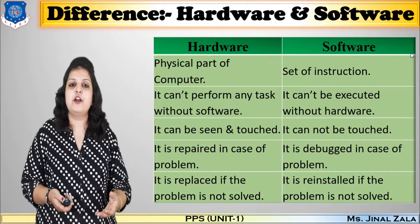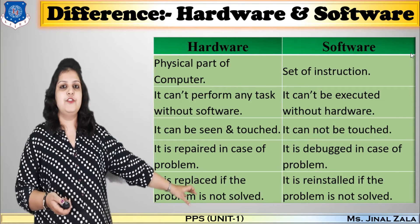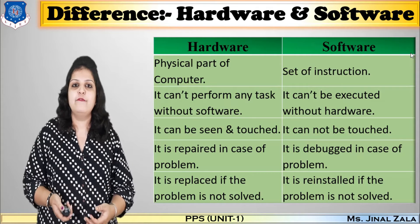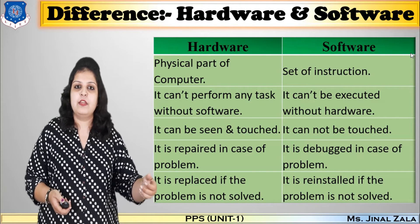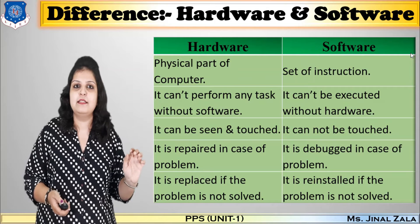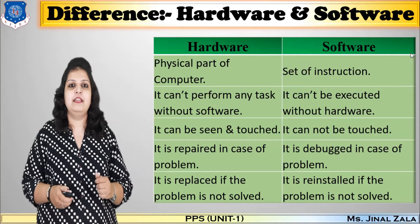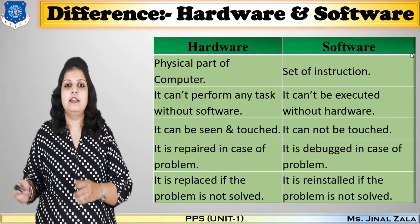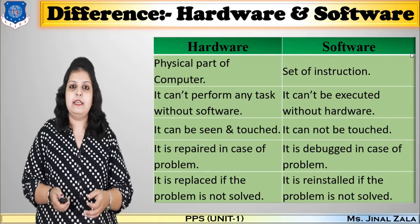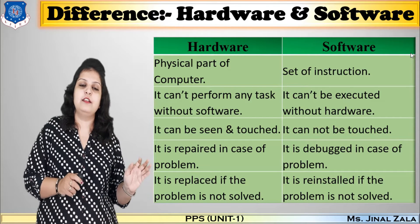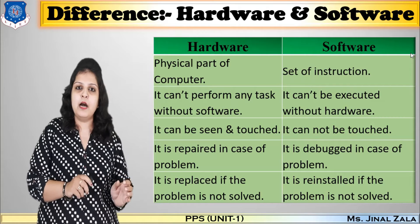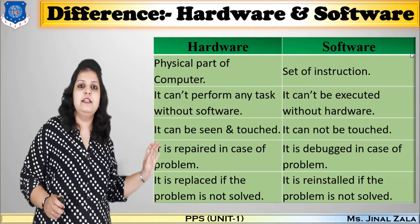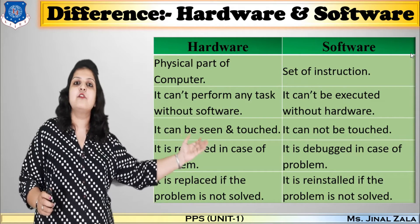Hardware can be touched and felt — we can touch the CPU or monitor. But we cannot touch or feel software like the operating system. Hardware is repaired in case a problem occurs, and software is debugged in case of a problem. If the problem is not solved, hardware can be replaced, but software can be reinstalled. These are the differences between hardware and software.